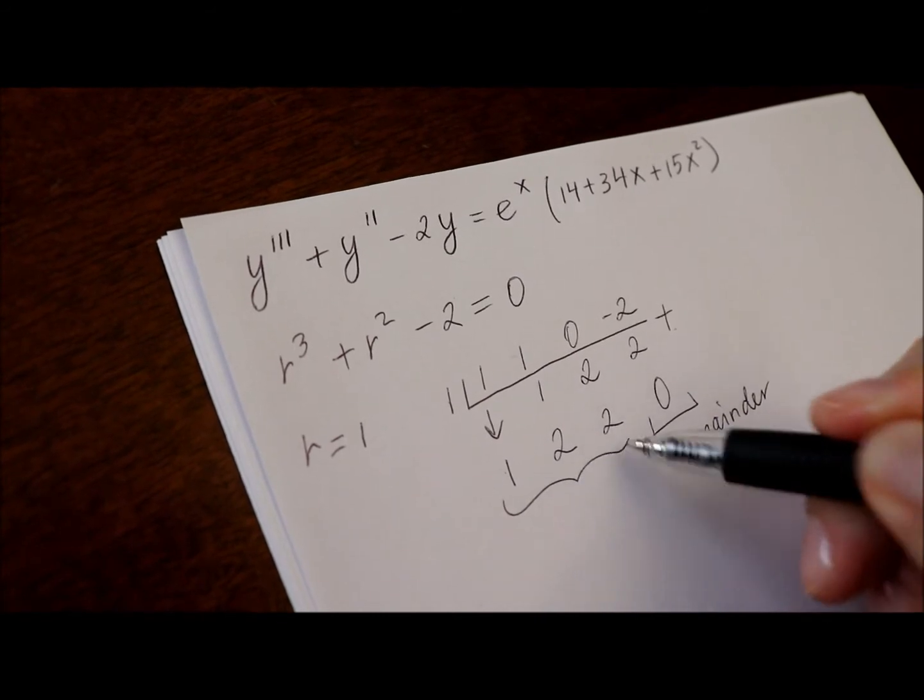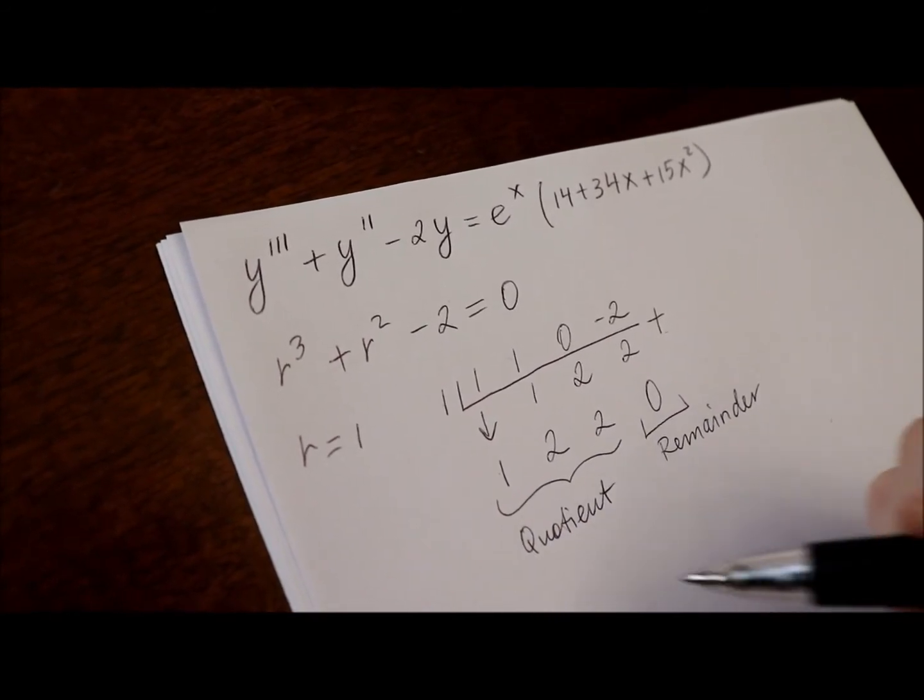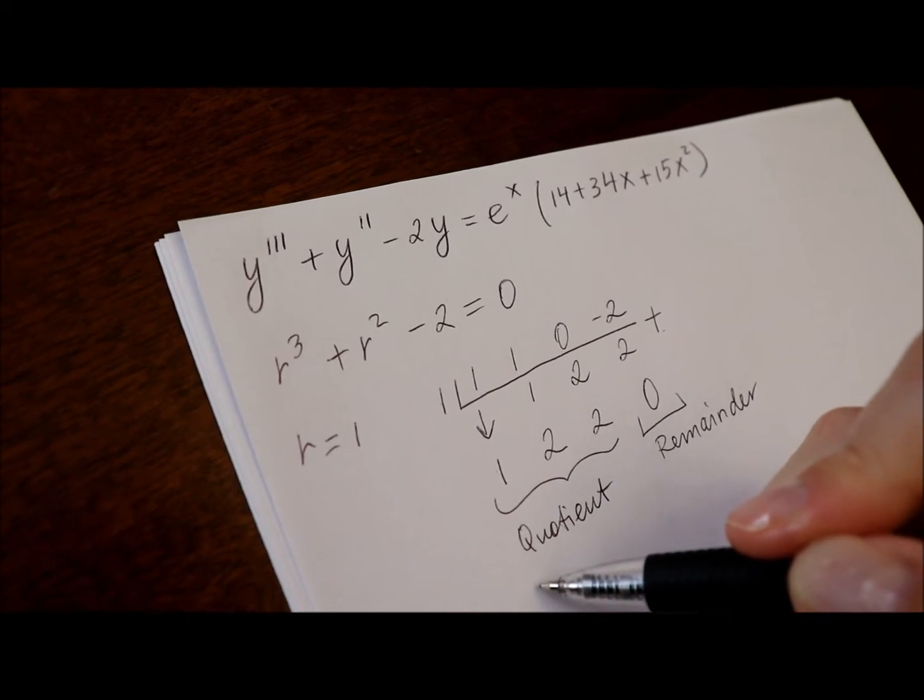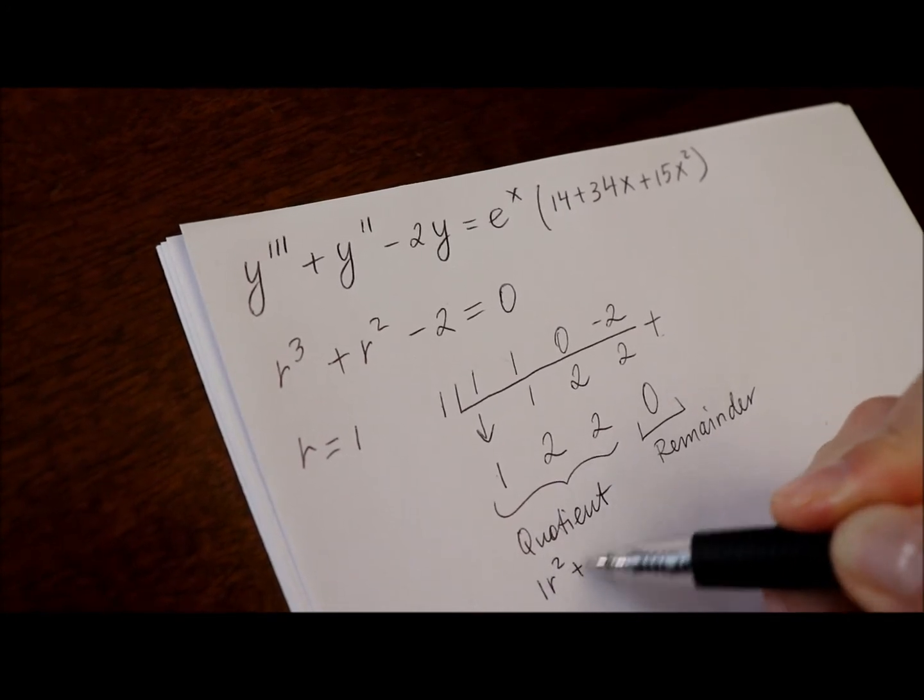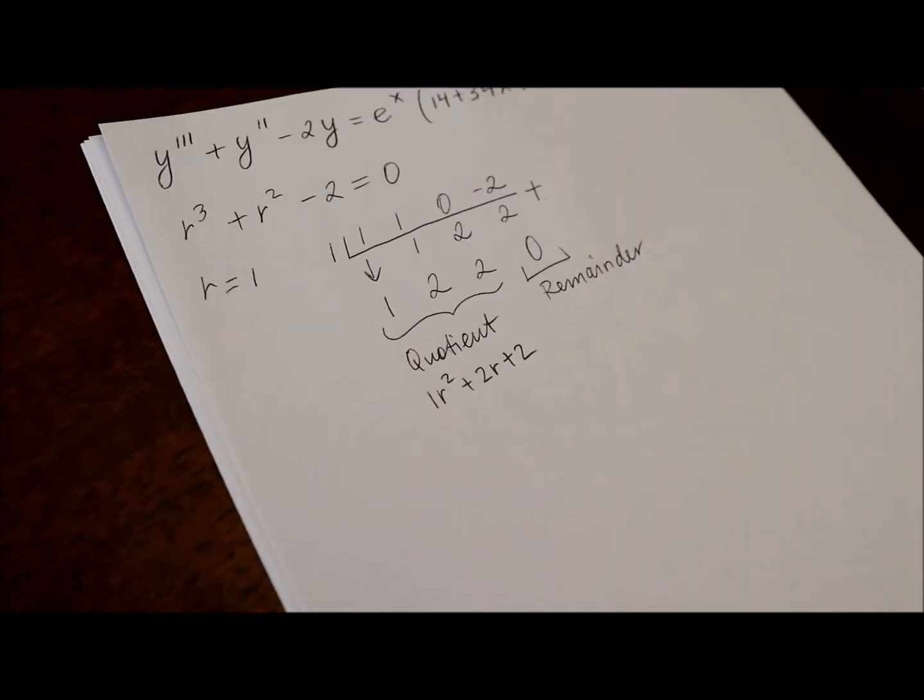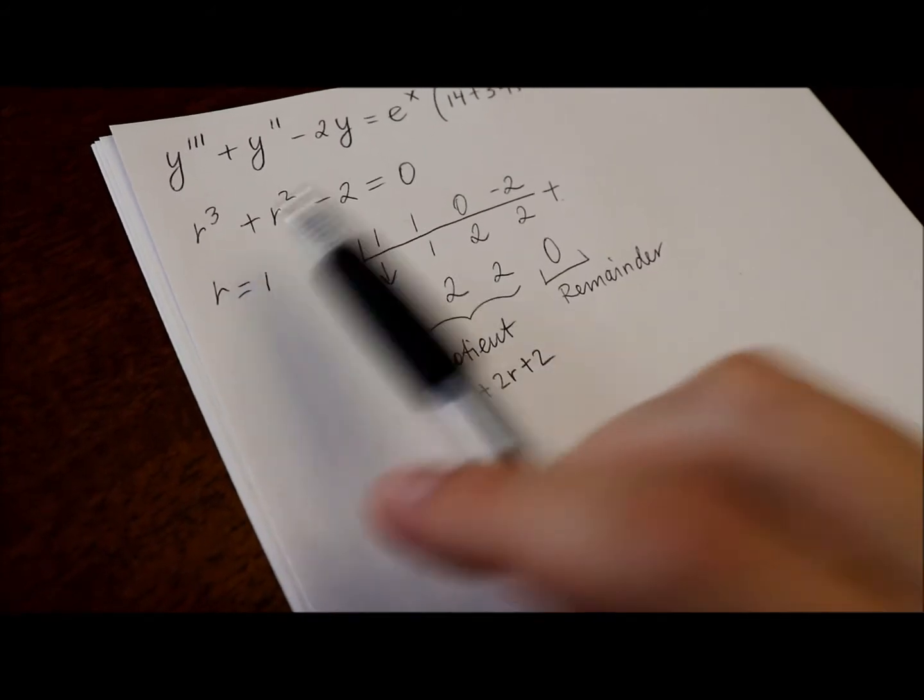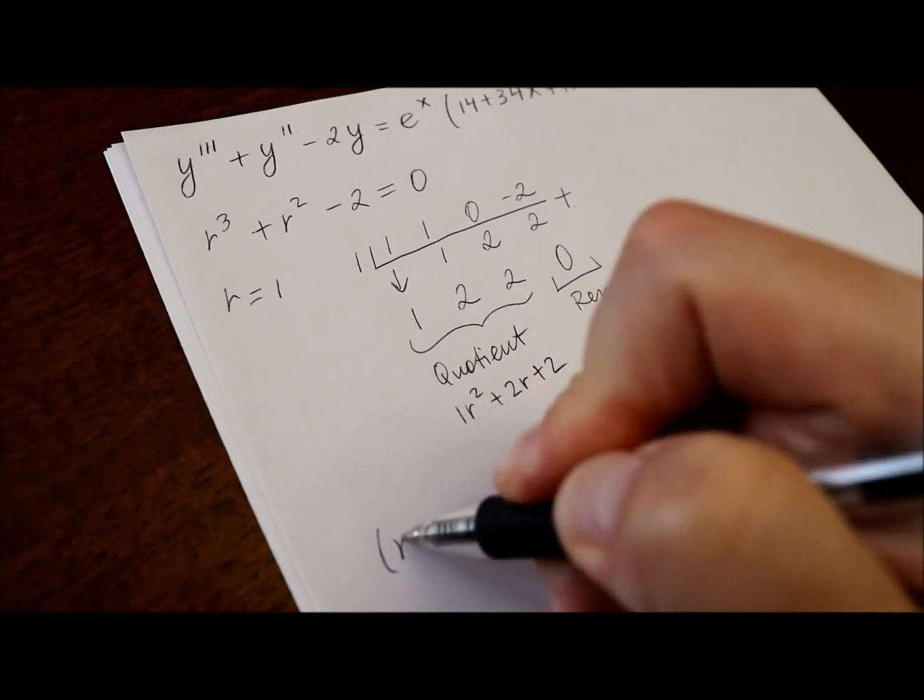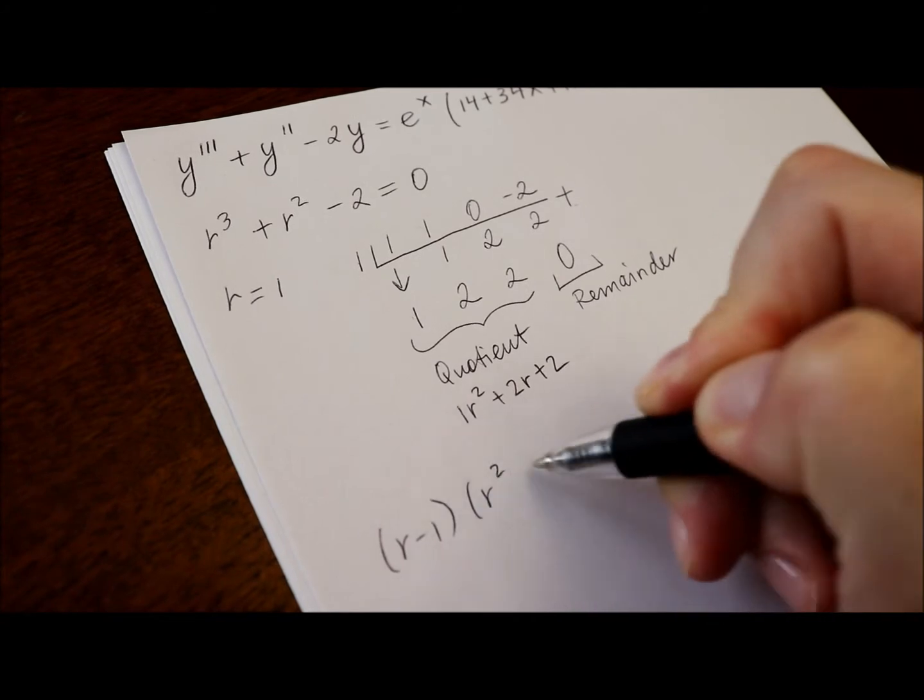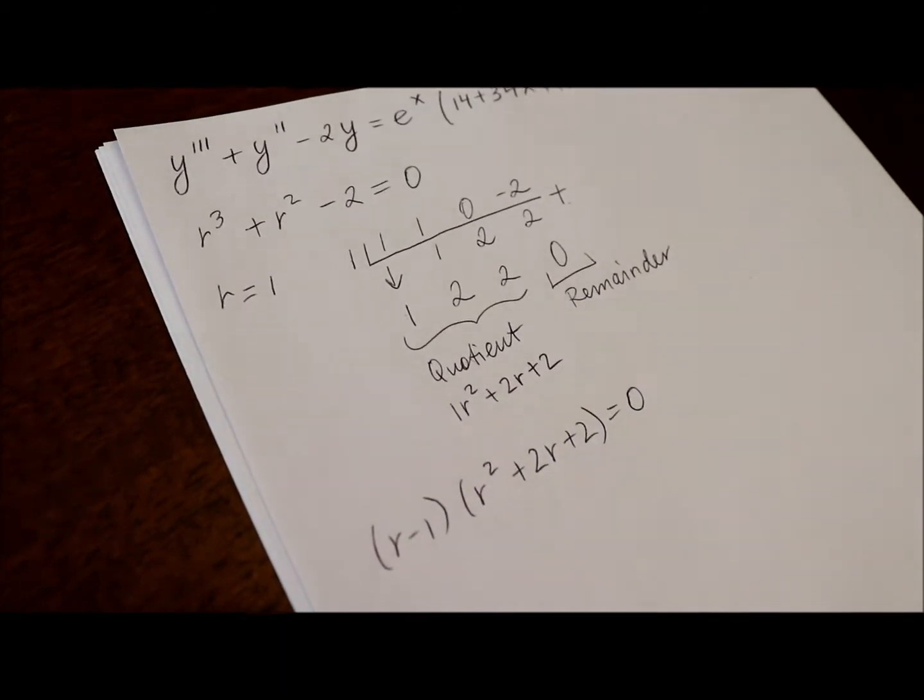And these are the coefficients of the quotient. Or in other words, you can write it as 1r squared plus 2r plus 2. That means that instead of this form, we can write the factored form r minus 1 times r squared plus 2r plus 2 equals 0.